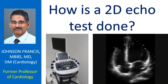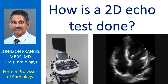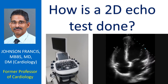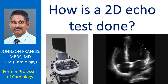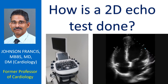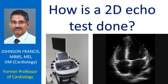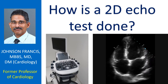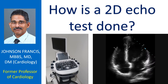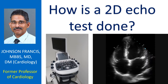2D echo is short for 2-dimensional echocardiogram. When echocardiogram — the ultrasound study of the heart — was invented, it was a one-dimensional study known as M-mode echocardiogram. In M-mode echocardiogram, also known as TM or time-motion mode, movement of various structures of the heart was charted along the y-axis with time elapsed as the x-axis. There was also a B-mode or brightness mode, in which the intensity of the echo from the structures was depicted.